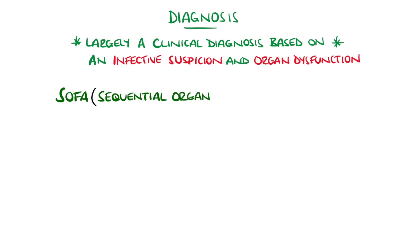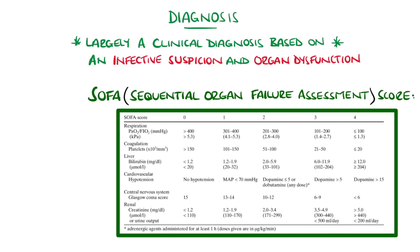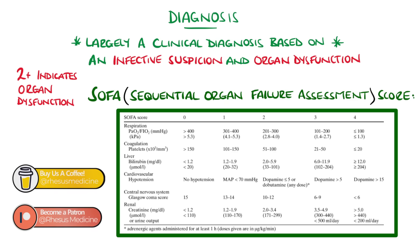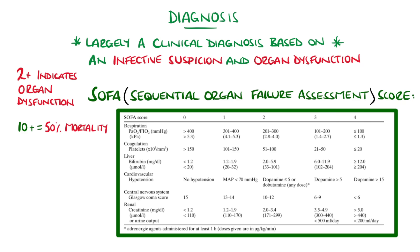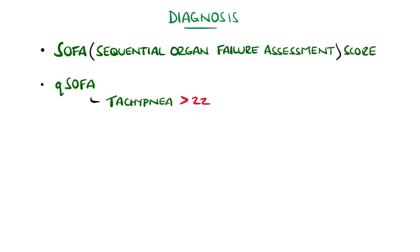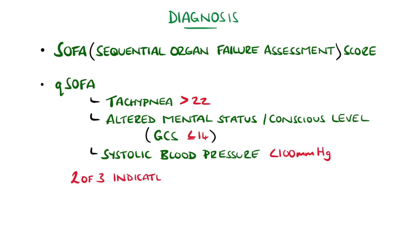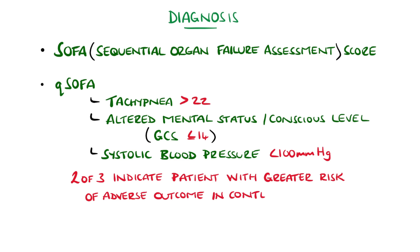The SOFA score was devised for use in the intensive care unit to determine the extent of organ failure in sepsis patients. It generally requires a score of two or more, or a change of two, to indicate organ dysfunction and therefore define sepsis. The score is based on six parameters reflecting cardiovascular, respiratory, renal and liver function, conscious level, and coagulation. Initial scores of 10 or higher indicate a 50% mortality, while scores of 14 or above are associated with a 95% mortality. A condensed version called quick SOFA or qSOFA — including tachypnoea, altered mental status or reduced conscious level, and systolic blood pressure below 100 mmHg — with two out of three of these present indicates the need for further investigation, highlighting potential sepsis patients with a greater risk of adverse outcomes.